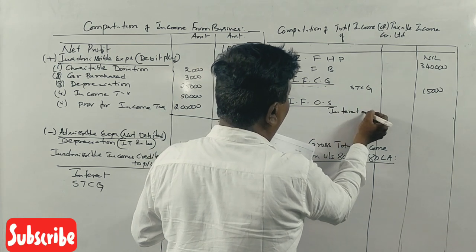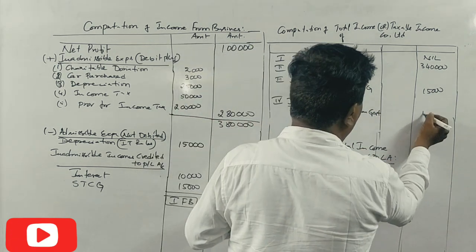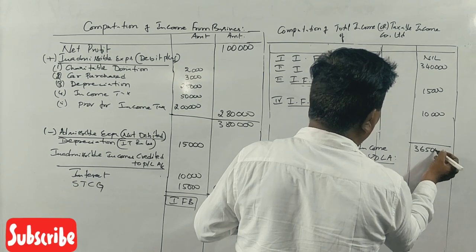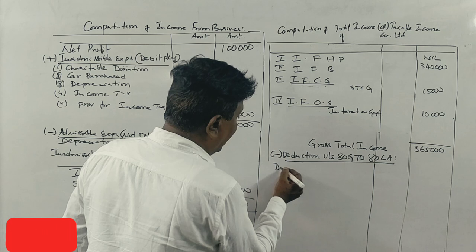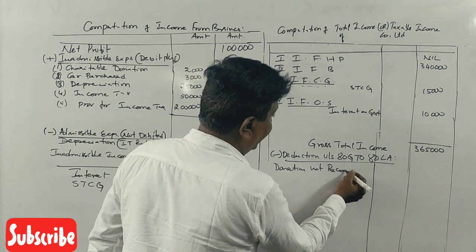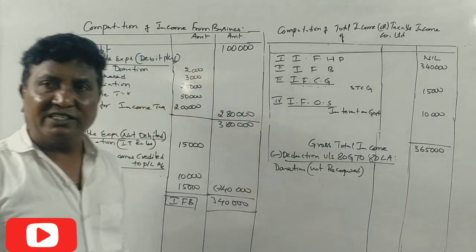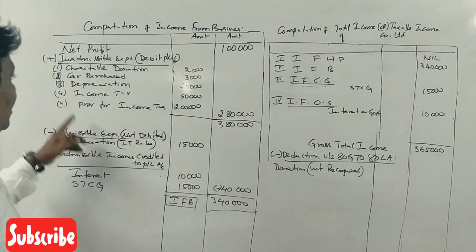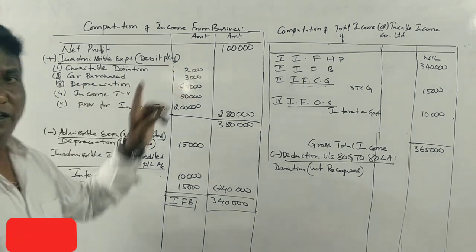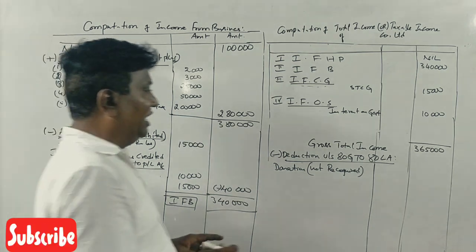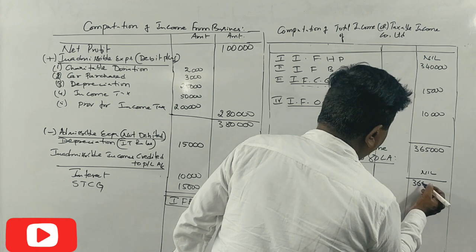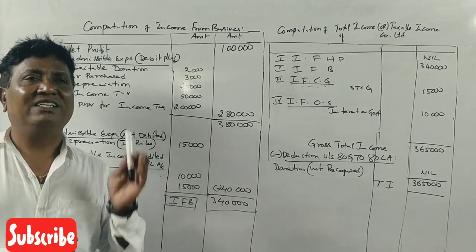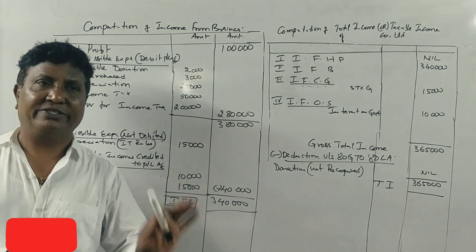Interest from government securities is 10,000. So the gross total income is 3,65,000. The charitable donations are not to a recognized institution, so no deduction is allowed. Therefore, the taxable income is 3,65,000. That's how you calculate it — it takes about 6 to 10 minutes maximum.